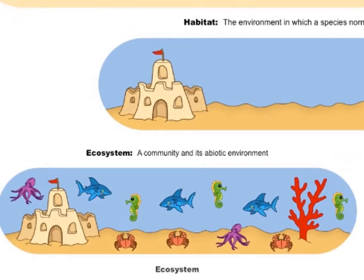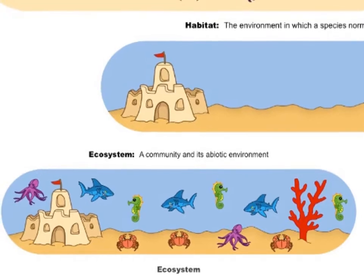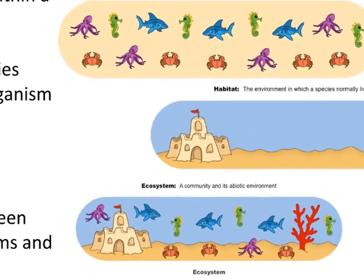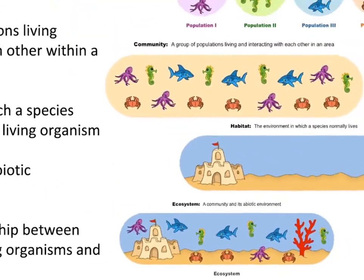Lastly, we have the full ecosystem. The ecosystem is the combination of all of the living and non-living parts. If we had an equation, it would be: community plus habitat, or biotic factors — the living factors — plus abiotic factors — the non-living factors. And finally, ecology is the study of these ecosystems and the relationships between biotic and abiotic factors.